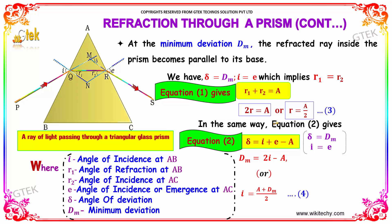In the same way, equation 2 gives delta equals i plus e minus A. Replacing delta with dm and i with e, you have got dm equals 2i minus A. So i equals A plus dm divided by 2.